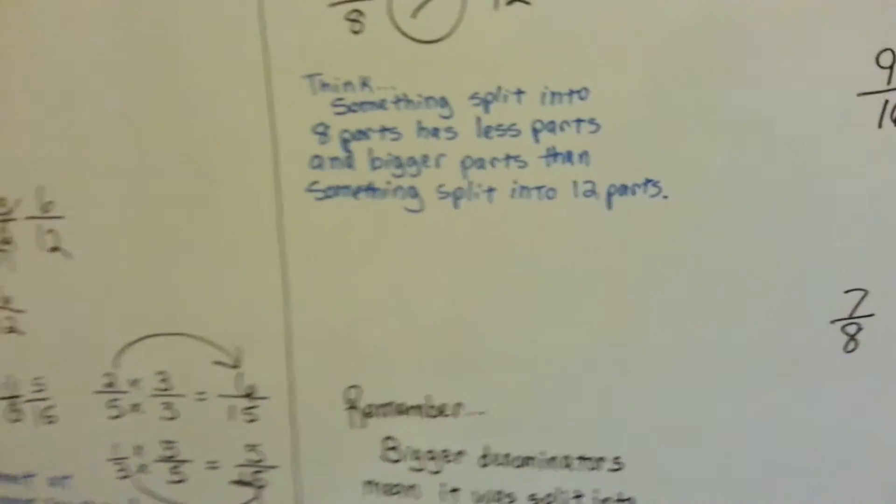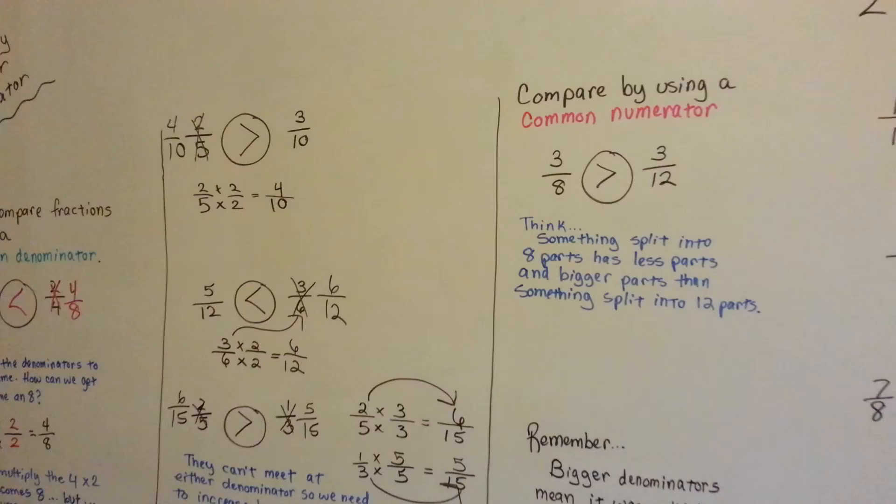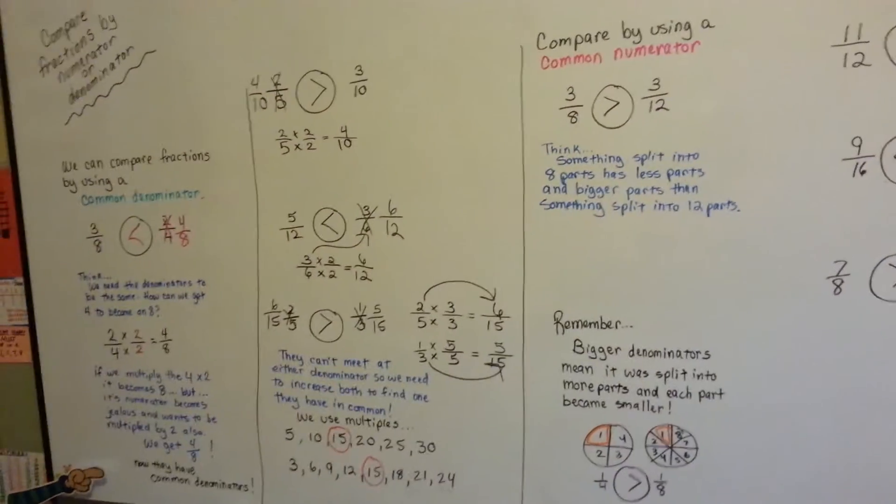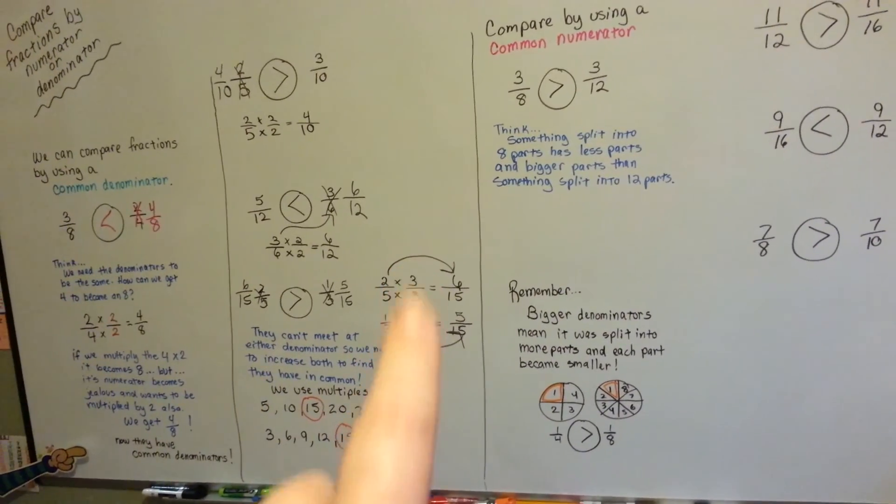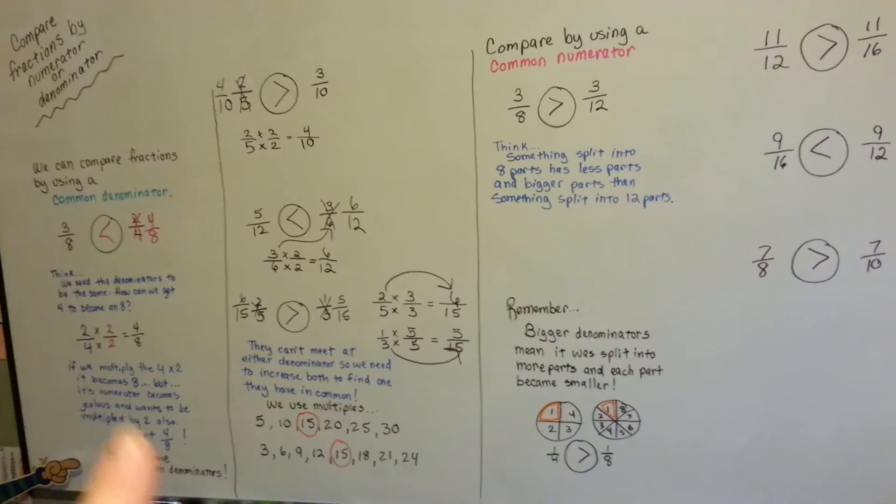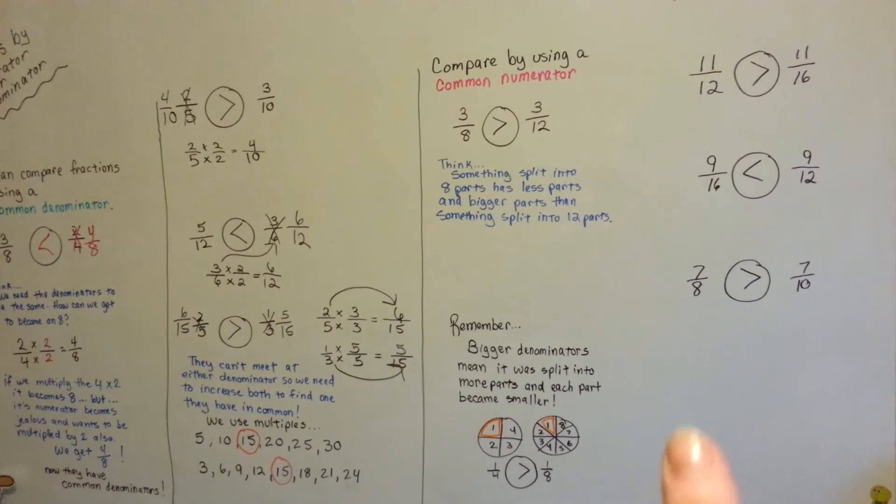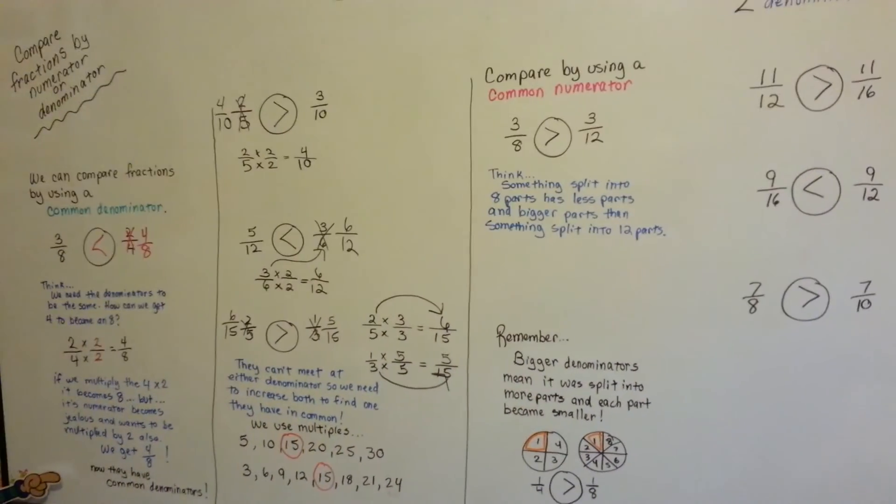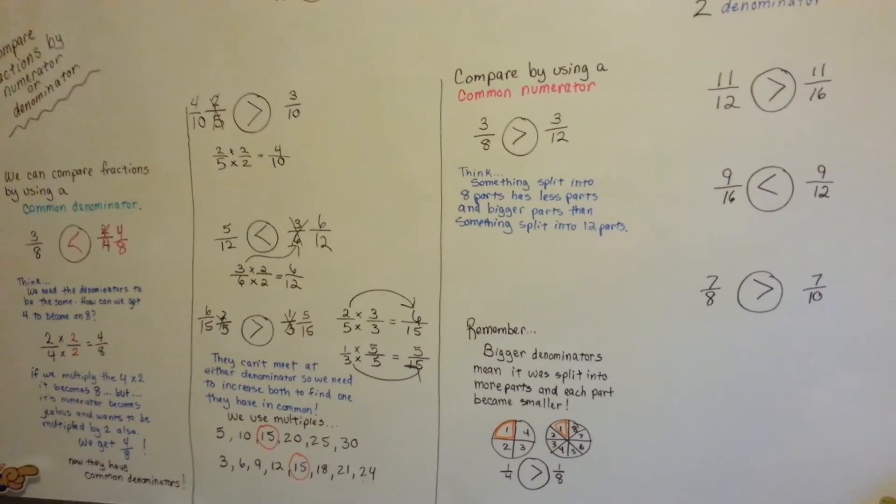So that's how we can compare fractions by numerator or denominator. Remember that when you're doing the denominator, it has to meet at a common multiple. And you can multiply the denominators to get to that common multiple. And remember, the bigger the denominator is, the littler the fraction is. I'll see you next video. You're doing great. Keep up the good work. Bye.